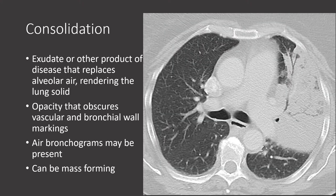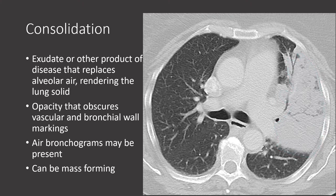On the right is a CT image demonstrating an area of consolidation affecting the left upper lobe — that is, lobar consolidation. Notice the increased density within the lung parenchyma and how we cannot see normal bronchovascular markings running through this area. Also notice within the consolidation these branching lucencies, which reflect air bronchograms — the same structures we saw on the chest x-ray.